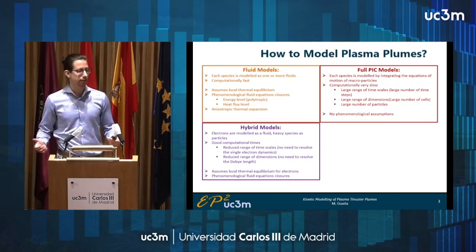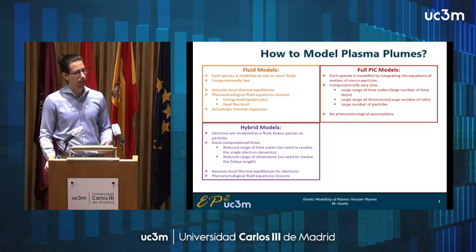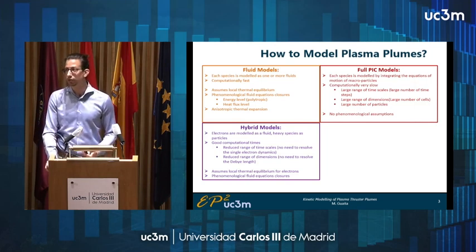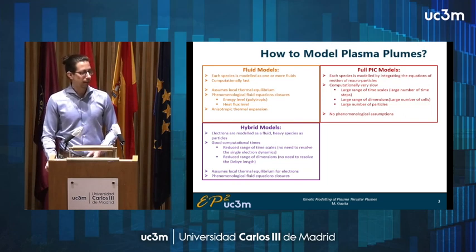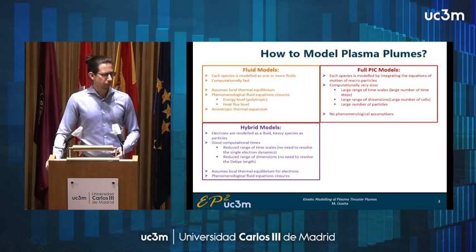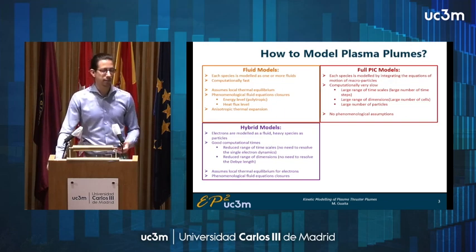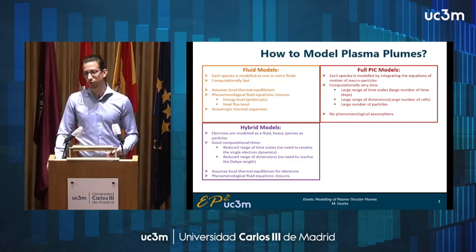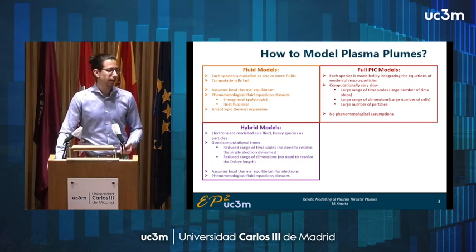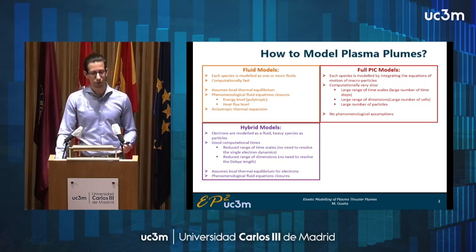A way to harness the advantages of both fluid and PIC models are hybrid models. In this case we model the heavier particles — ions and neutrals — using particles, while the more mobile electrons are modeled as a fluid. This allows us to obtain the good computational times of fluid models, but also inherit some of their drawbacks. For example, we again assume local thermal equilibrium for the electrons, and we have to close the fluid equation using some form of assumption.